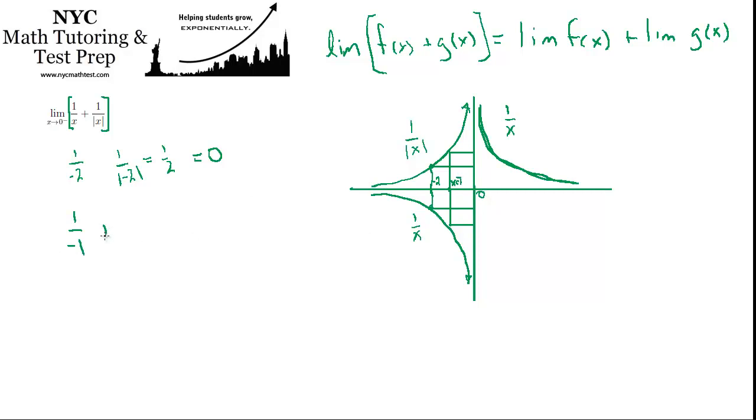1 over negative 1 plus 1 over the absolute value of negative 1 is negative 1 plus 1, which is 0. So now we're even further from the x-axis, and yet because one's positive and one's negative and they have the same magnitude, it's still 0.